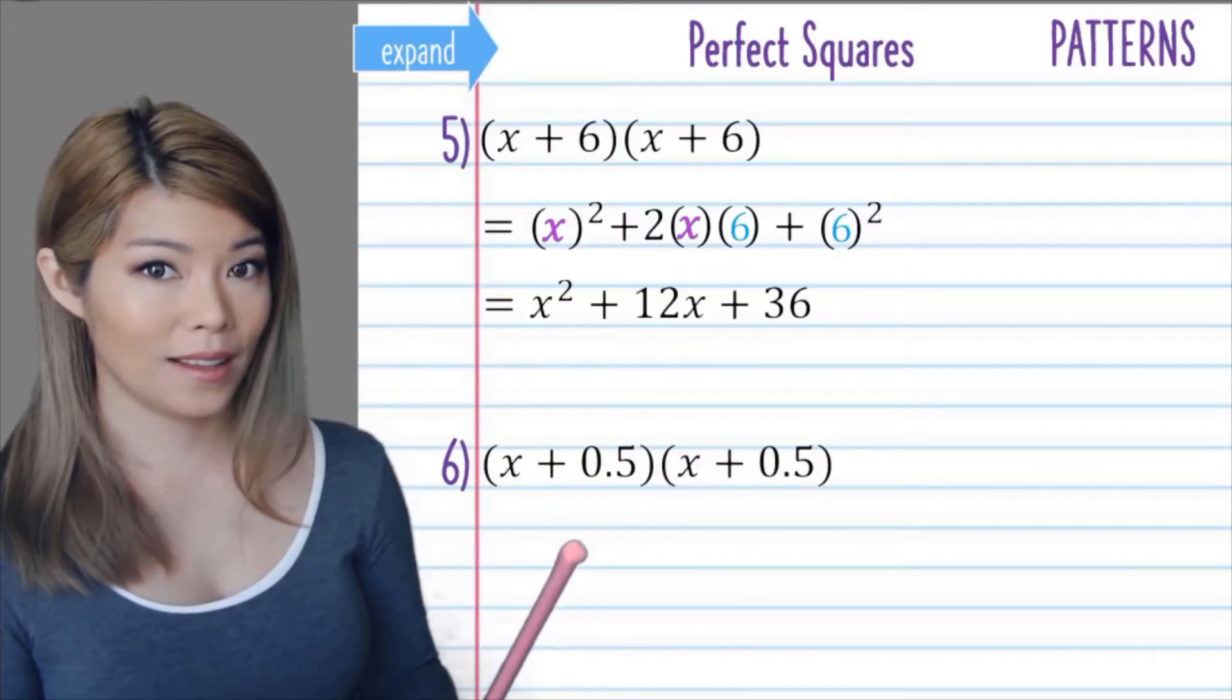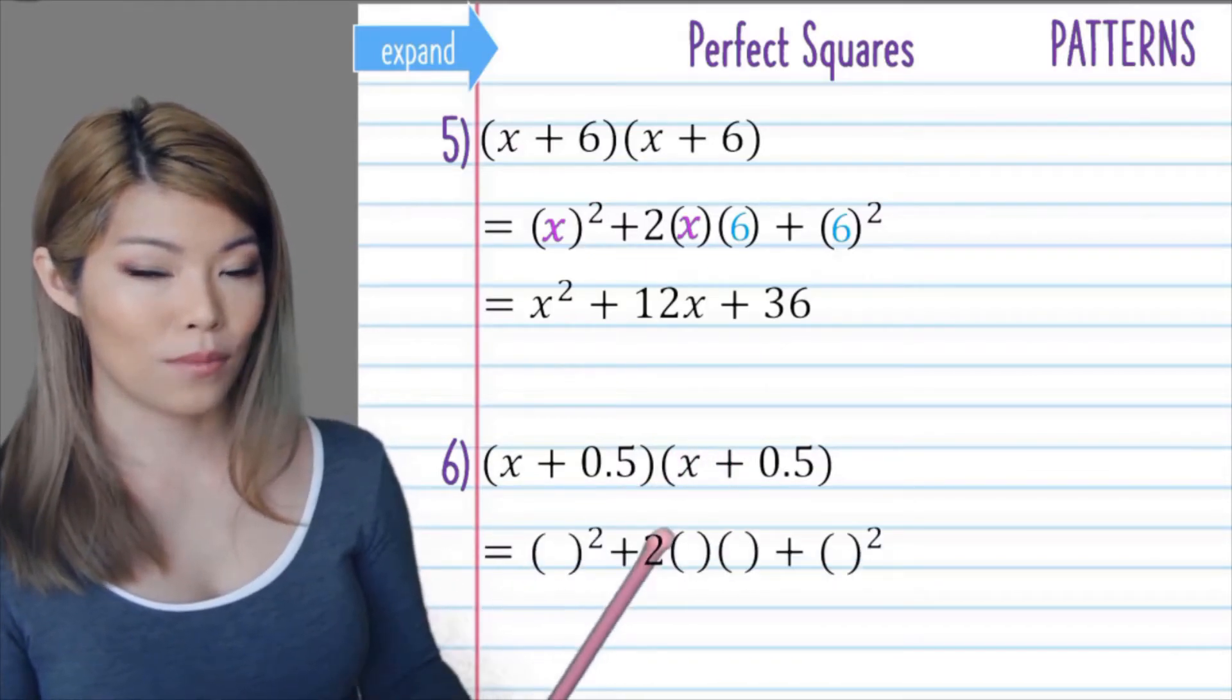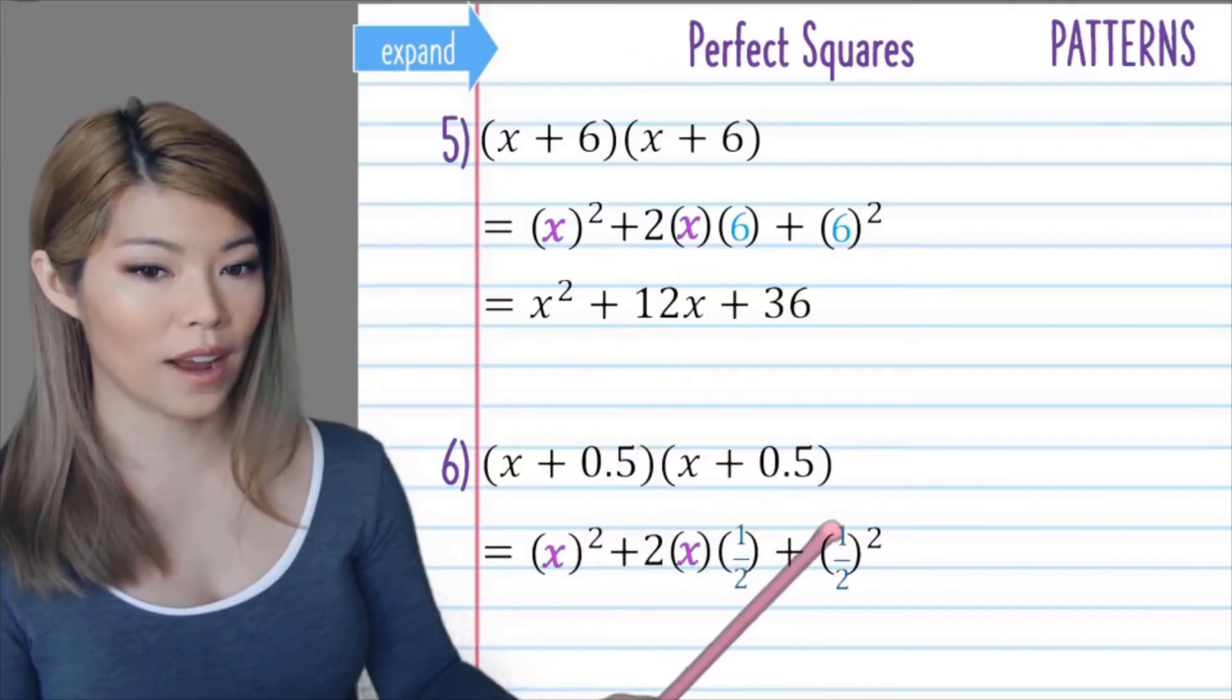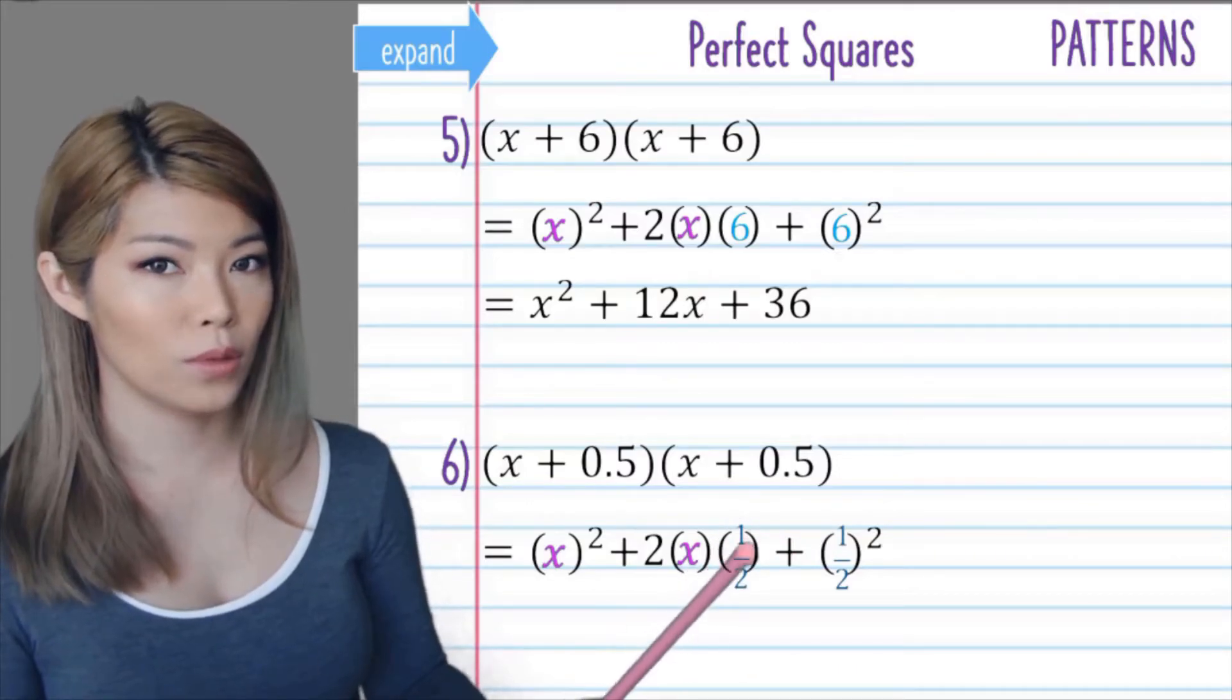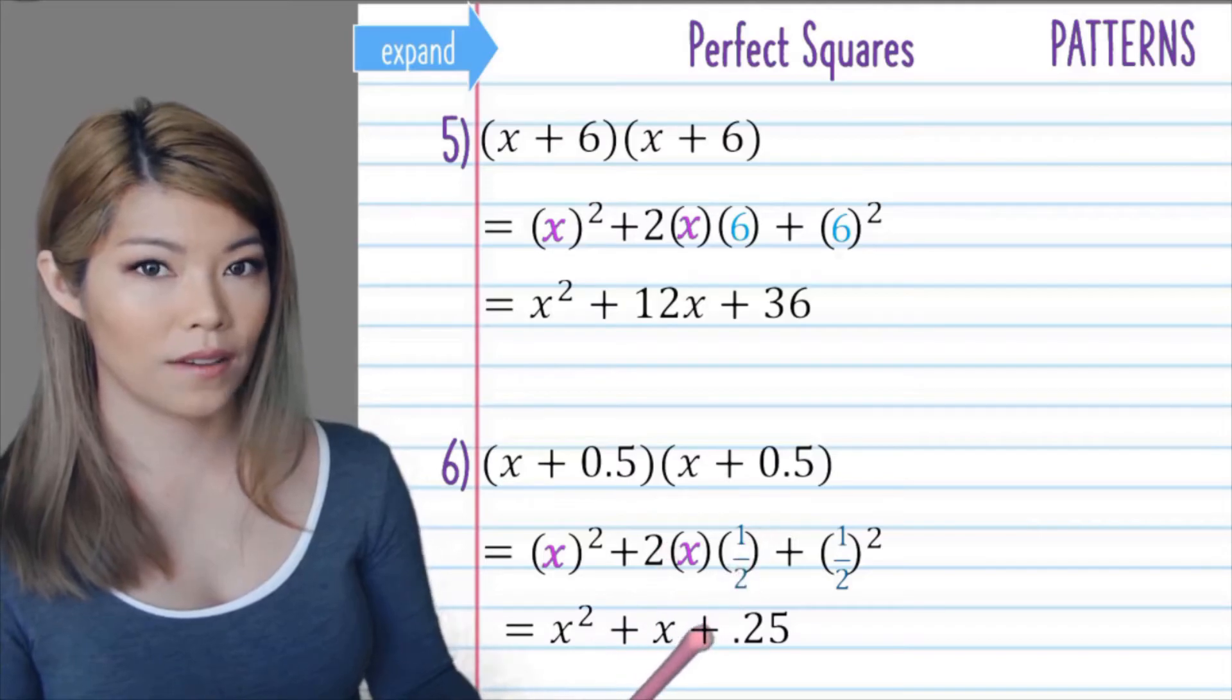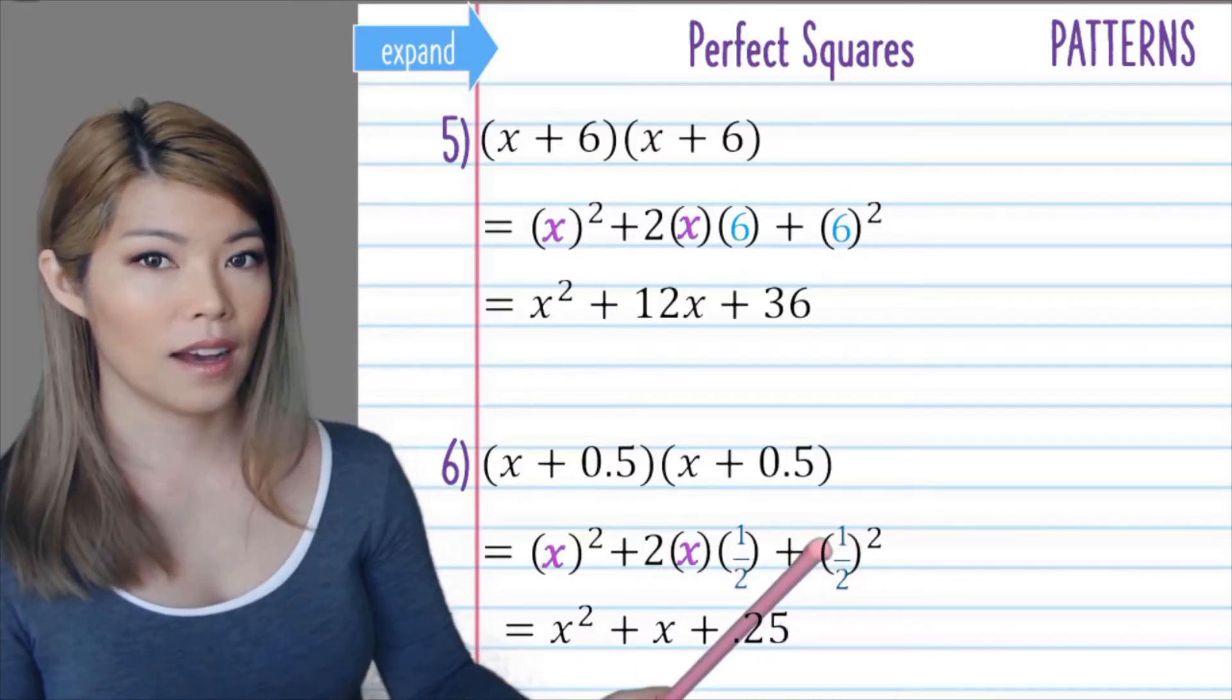Now this time we have a decimal. Again, same brackets, x in the first two brackets and the other term, half, in the other two brackets. It doesn't matter if you want to use decimals or fractions. So we have x squared, 2 times a half is 1, and a half squared is a quarter.